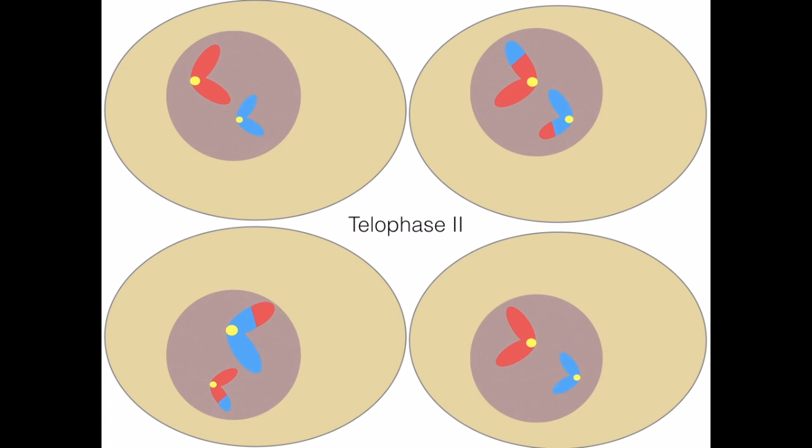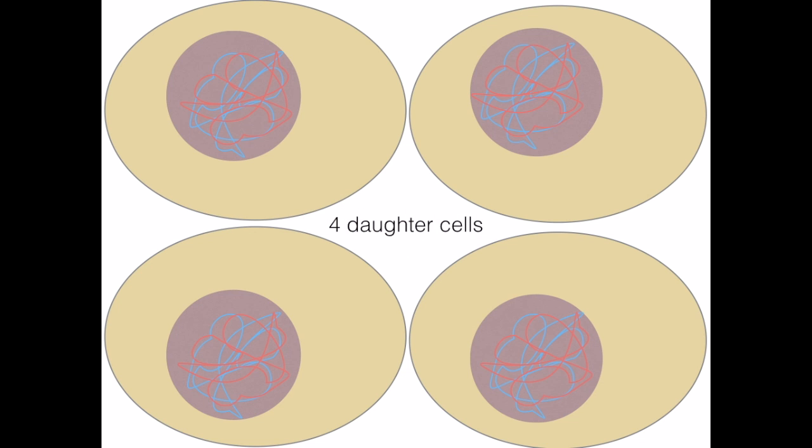After, the cells begin to re-form their nuclear membrane and the chromosomes diminish until the DNA is no longer in its chromosomal form, completing telophase 2.